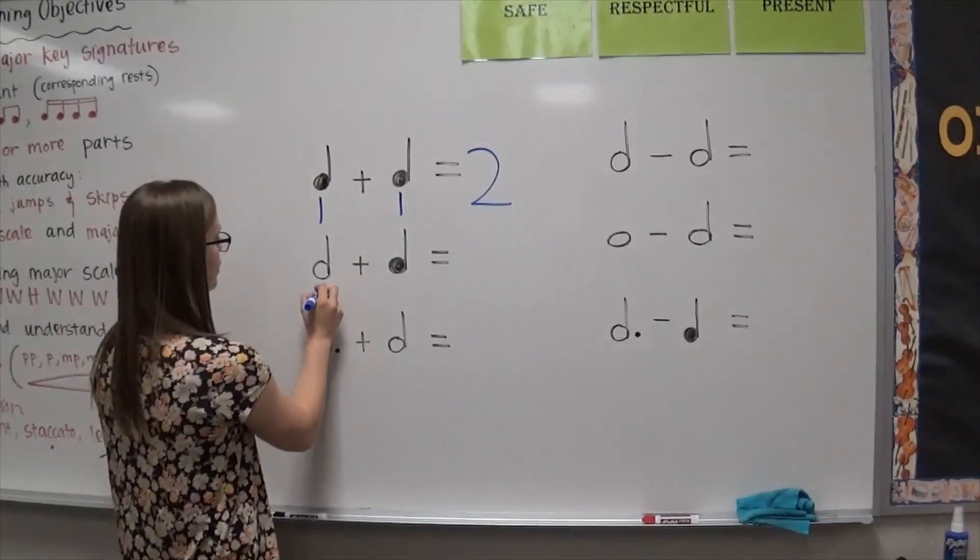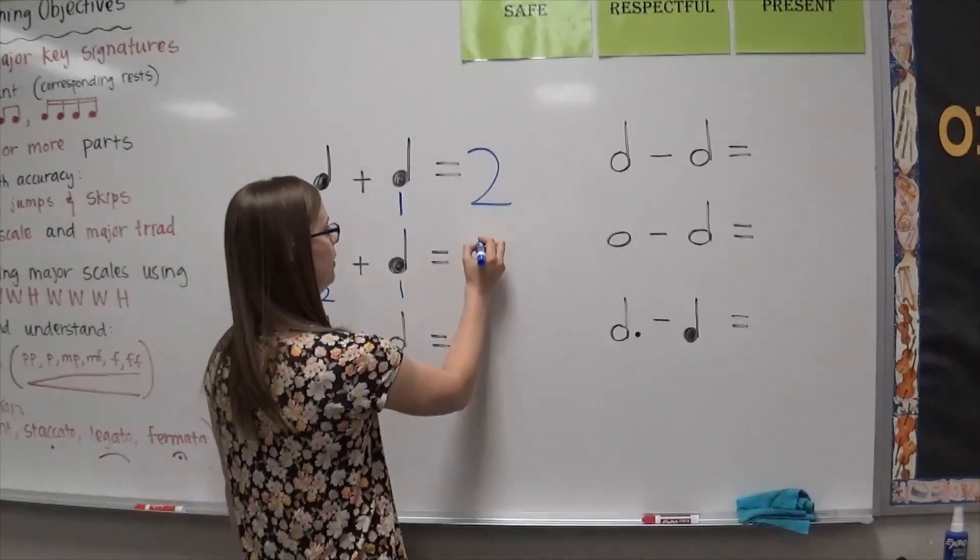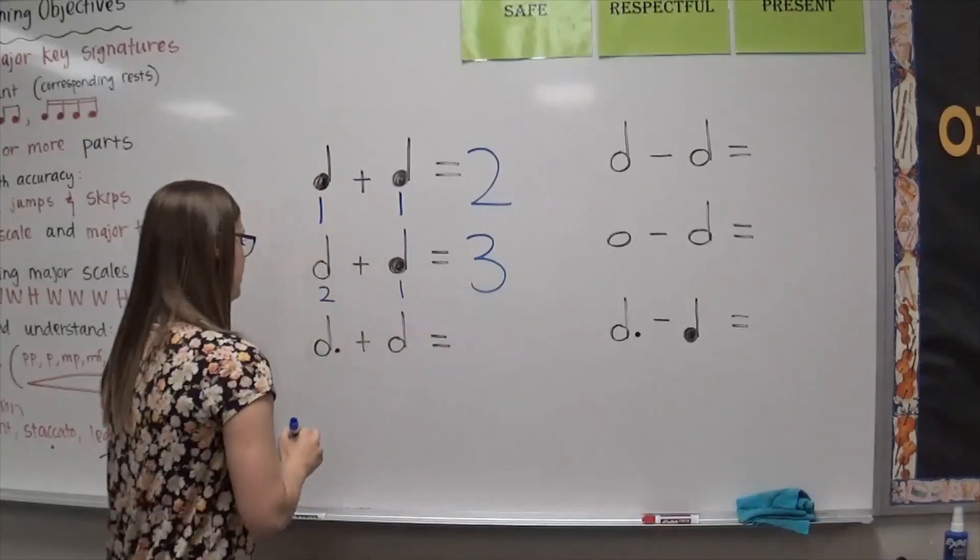Half note, how many beats? Two, and then a quarter note we know is one. Two plus one? Three.